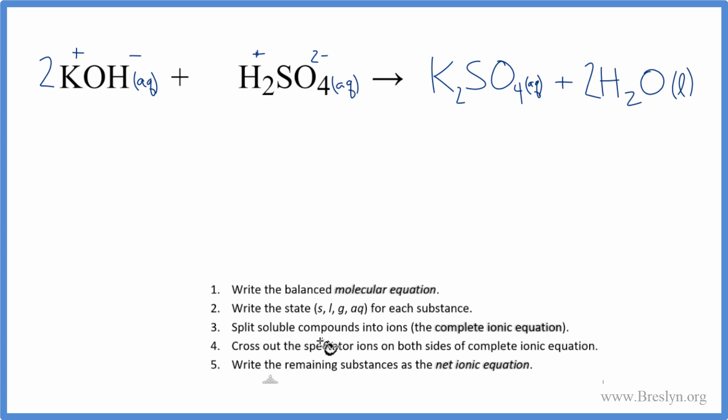Next, we're going to split the soluble compounds, those aqueous compounds, into their ions. This will be the complete or total ionic equation. So we have K+, but we have two of them, so 2K+. I won't write aqueous after these right now. And then I have two hydroxides, so plus 2OH-. Then over here, I have 2H+, and then one sulfate ion, so plus SO4 2-.